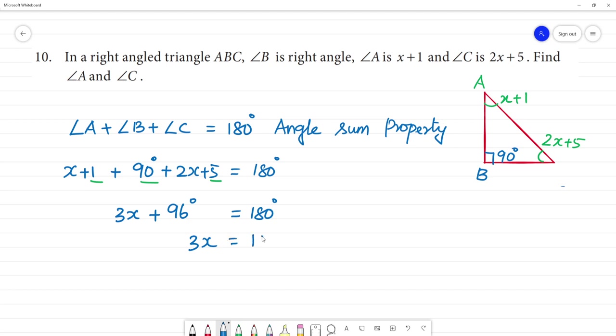3x equal to, now 180 minus 96. So 180 minus 96, 10 minus 6 is 4. We get 7. 17 minus 9 is 8.